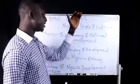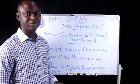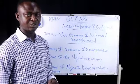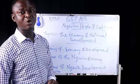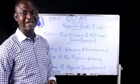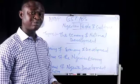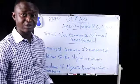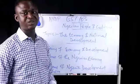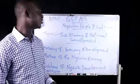Moving forward, we had the 1979 Second Republican constitution, then the 1989 Third Republican constitution, and presently we are operating the 1999 constitution as amended, because we are in the Fourth Republic. A republic is a period of civil rule in the country whereby civil authority takes charge of the affairs of the country.